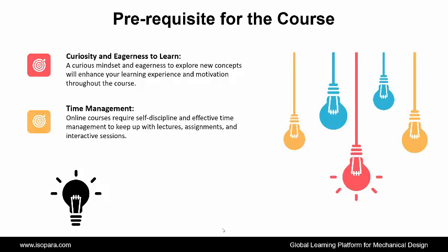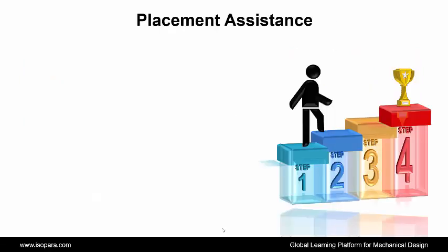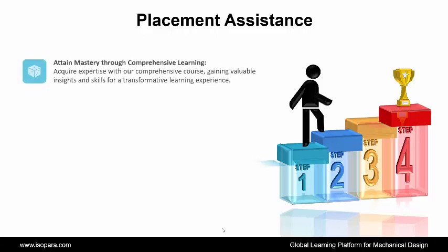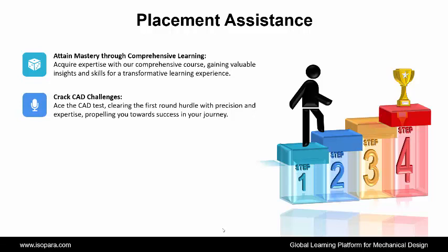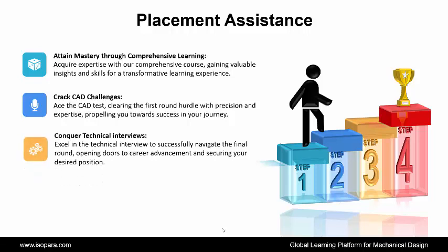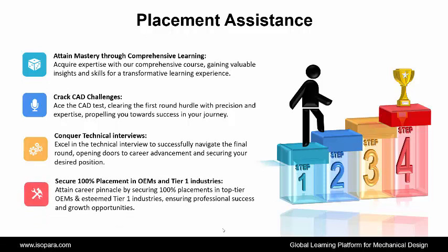Now, we see Placement Assistance. IsoPara's placement assistance works in 4 steps. First is Attain Mastery Through Comprehensive Learning — acquire expertise with our comprehensive course, gaining valuable insights and skills for a transformative learning experience. Second is Crack CAT Challenges — ace the CAT test, clearing the first round hurdle with precision and expertise, propelling you towards success. Third is Conquer Technical Interviews — excel in the technical interview to successfully navigate the final round, opening doors to career advancement and securing your desired position. And fourth is Secure 100% Placement in OEMs and Tier 1 Industries — attain career pinnacle by securing 100% placements in top-tier OEMs and esteemed Tier 1 industries, ensuring professional success and growth opportunities.